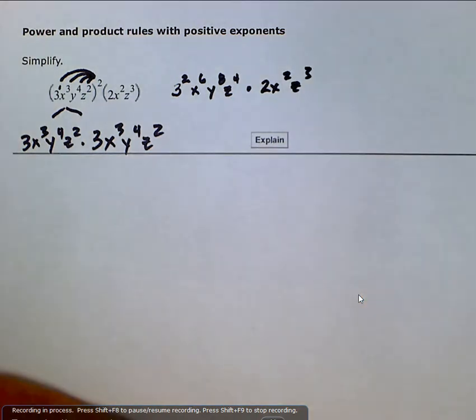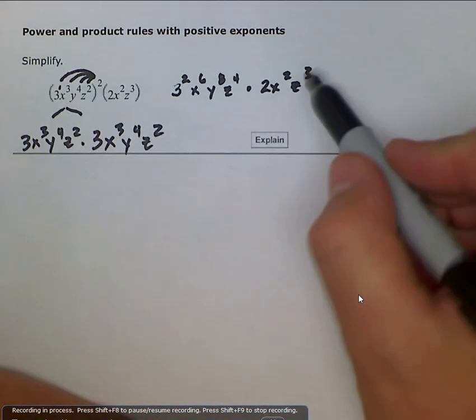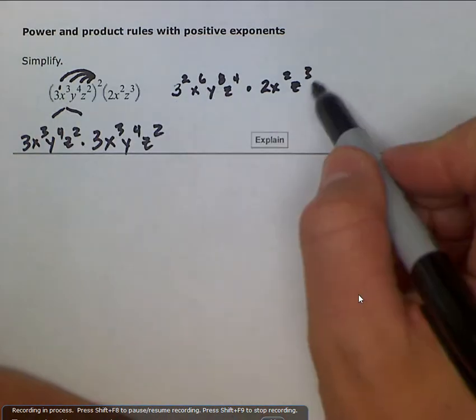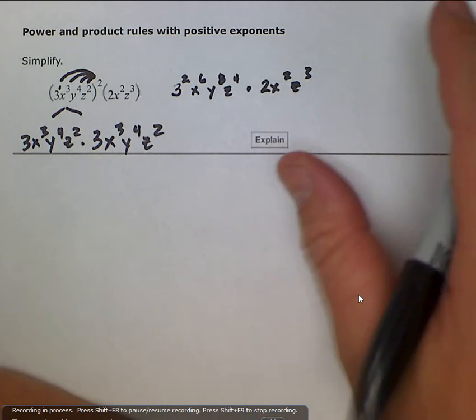And if we want to make this even simpler, because now we're just dealing with product rule, when we're multiplying like bases, we add our exponents. To make it a little easier to see, I'm going to separate this out.